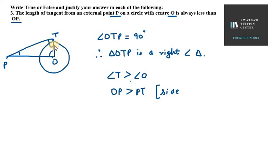You can see that if angle T is 90, then what is the side opposite to it? OP. OP will be greater than what? From the opposite side. The opposite side is PT. So OP is greater than PT, while side opposite to greater angle is larger.